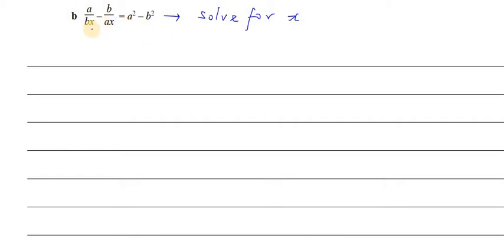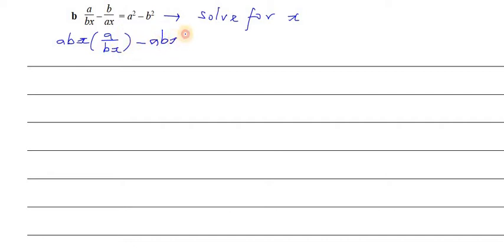To solve for x, I want to cancel the ax and bx terms. I'm going to multiply each term on the left-hand side and the right-hand side by abx. So we have abx times (a/bx) minus abx times (b/ax).